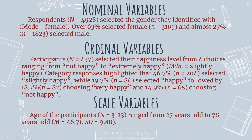For scale variables, we would write: 'Age of the participants ranged from 27 years old to 78 years old,' with the mean and standard deviation at the end of the sentence — M = 46.71, SD = 9.88. Even though this sentence is short, we have the count, the spread from 27 to 78 years old, the measure of central tendency (mean), and the measure of dispersion (standard deviation). These two pieces of information give us all we need to know for descriptives for this scale variable.